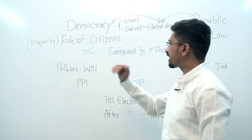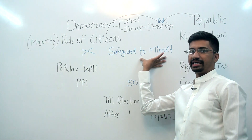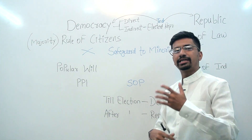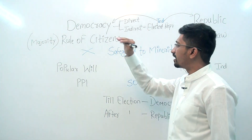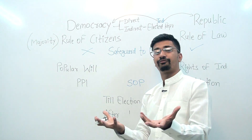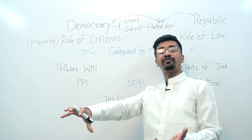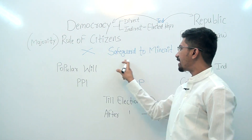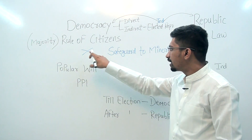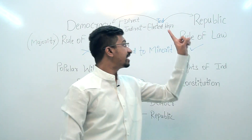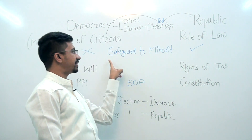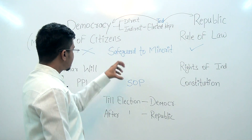Coming to the second point of democracy — safeguard to minorities. In a pure democracy, there is no safeguard to minorities. As we saw in the food habit example, an elected government can take any decision for all 140 crore people, and the interests of minorities may not be considered at all. But in a republic, the rule of law provides safeguards for minorities. That was the second point.